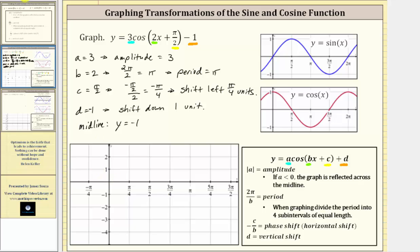So let's sketch that. Y equals negative one is here. To begin, we'll graph one period of this cosine function. Because there's a shift left pi over four units, we'll begin the graph here at x equals negative pi over four. Because the period is pi units, negative pi over four plus pi, or negative pi over four plus four pi over four, is three pi over four units. Therefore, we'll have one complete graph of the cosine function ending at three pi over four units. This is one period of the graph of the given cosine function.